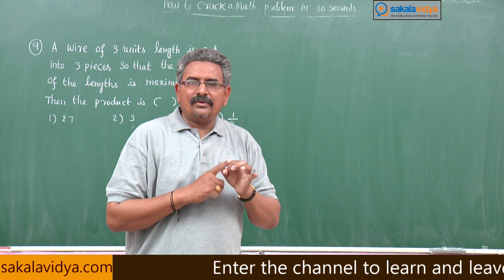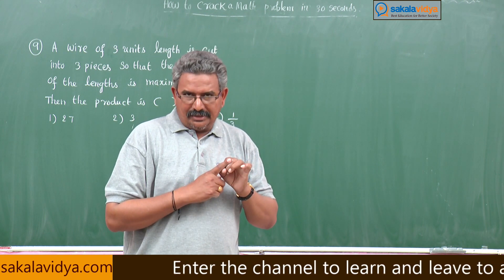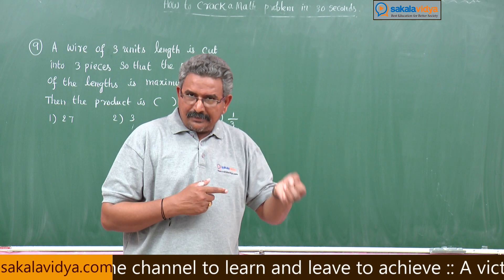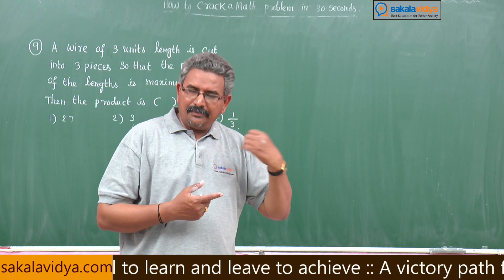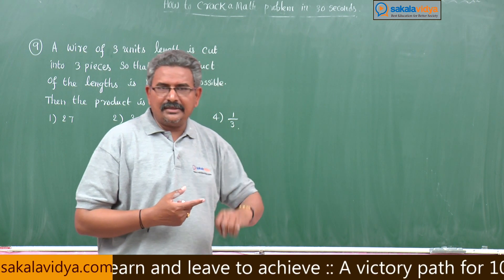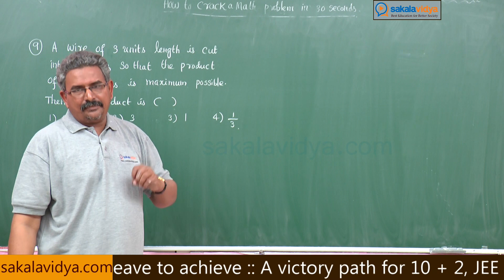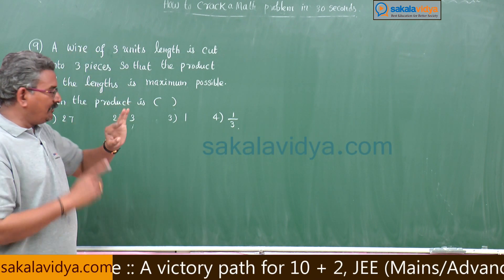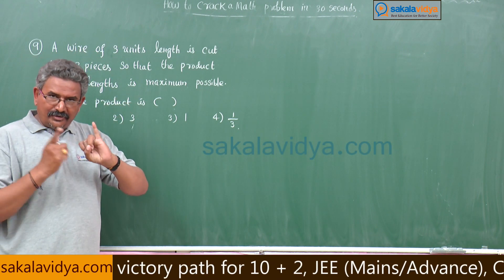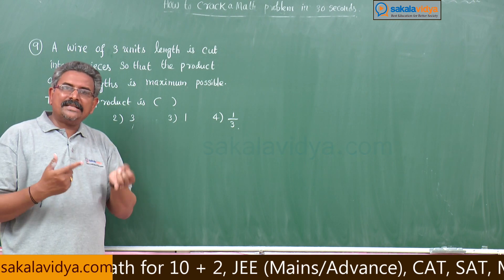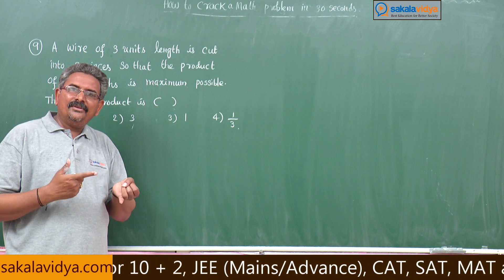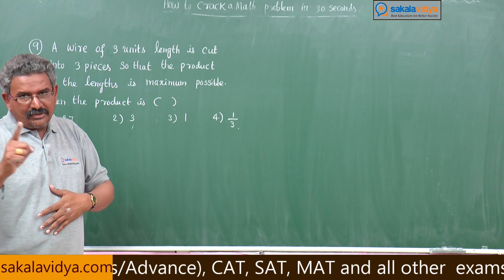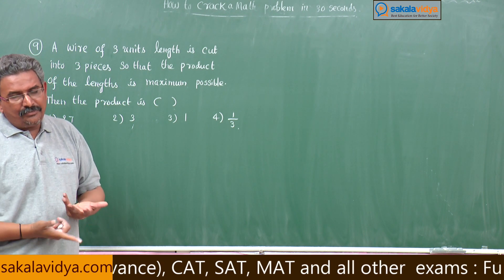If x equals y equals z, then each becomes constant divided by 3. Here each piece becomes one unit: x equals one, y equals one, z equals one. So the maximum product is x times y times z equals 1 times 1 times 1, which is 1.